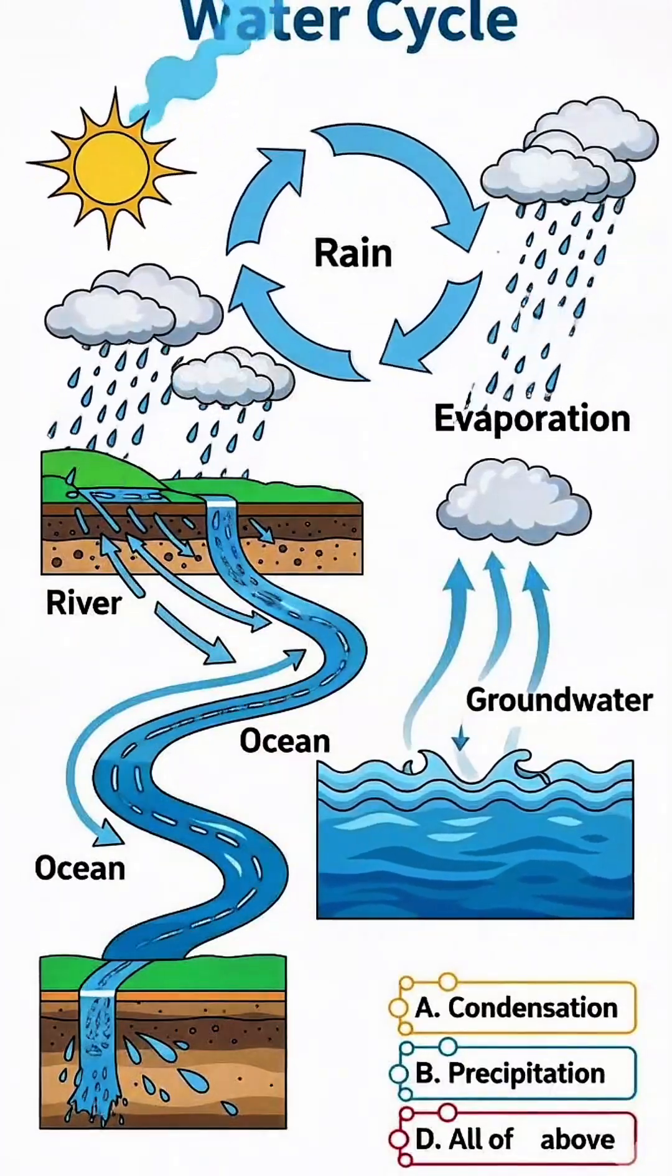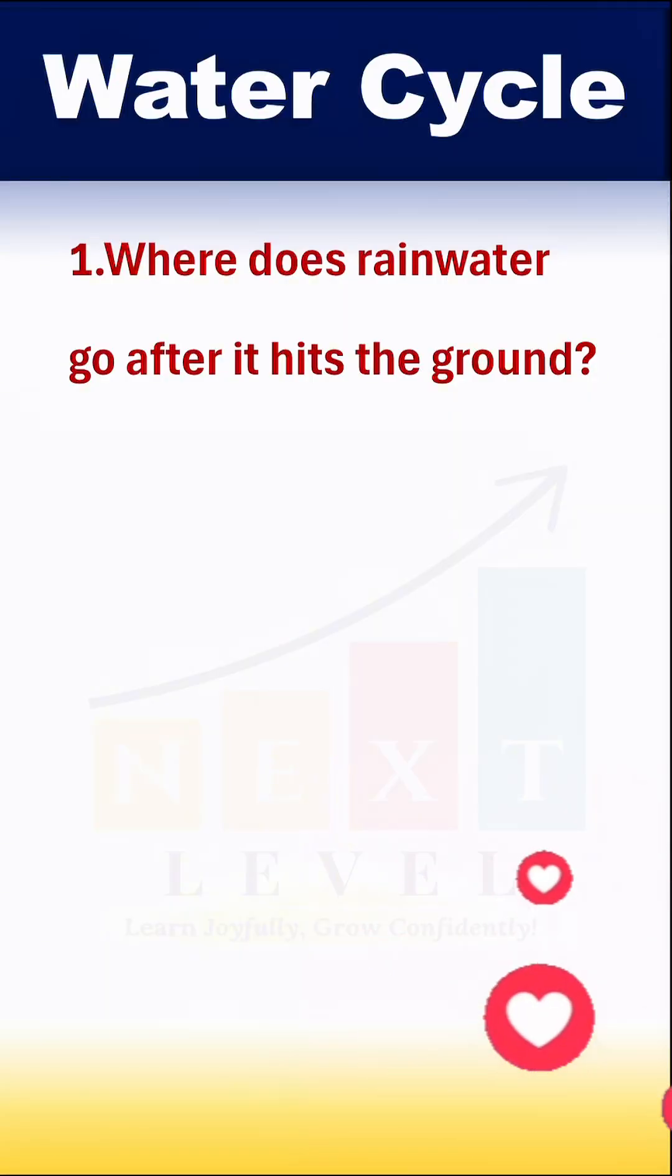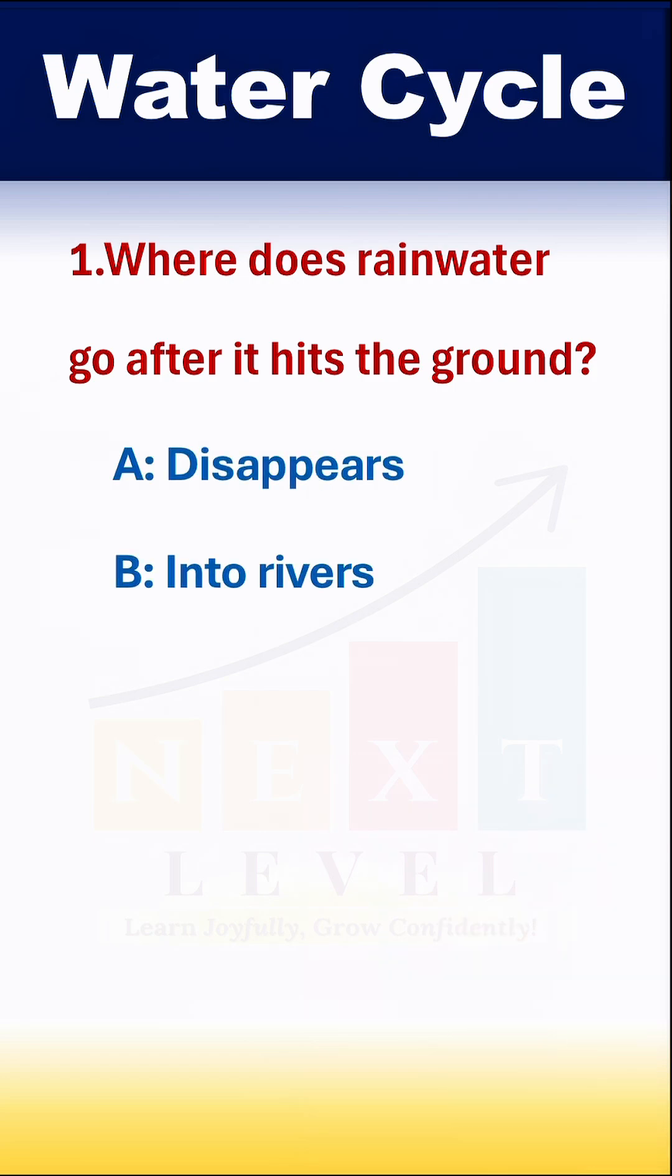Water cycle. Where does rain water go after it hits the ground? Option A: Disappear. Option B: Into the rivers. Option C: Turns into gas. Option D: Become ice.